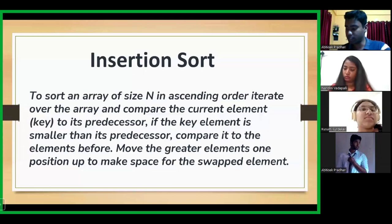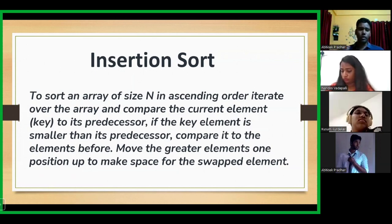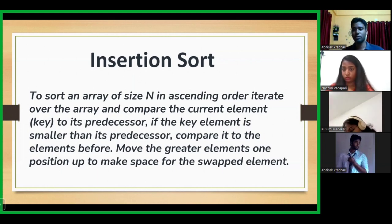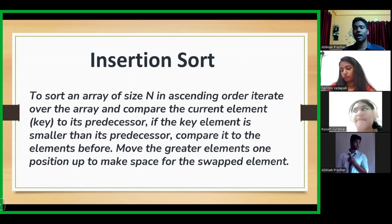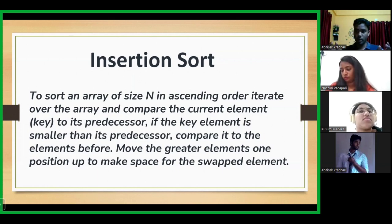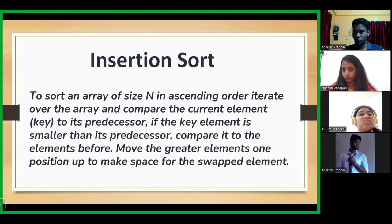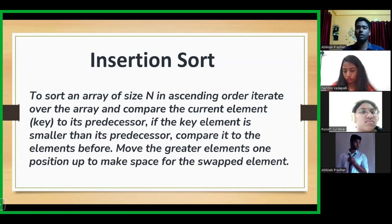Moving on to our next sorting algorithm: insertion sort. In insertion sort, to sort an array of size n in ascending order, iterate over the array and compare the current element to its predecessor. In simple words, your first element is considered to be at the correct position — it is assumed to be the smallest. Then your iteration starts from the second element. The second element is compared with the previous element, and if your second element is smaller than the first, you swap; otherwise you move forward.